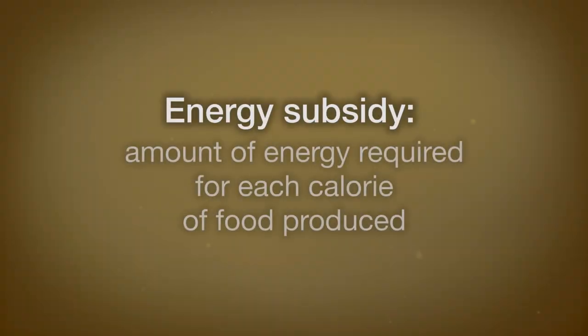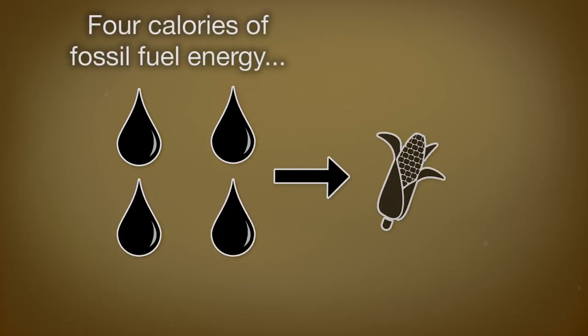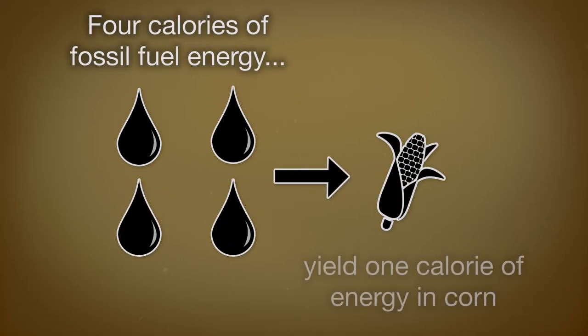When considering any kind of agricultural method, it's valuable to know the energy subsidy, which is the energy required for each calorie of food produced. For example, when growing corn, there might be four calories of fossil fuel energy expended to yield one calorie of corn. The energy subsidy for conventionally grown corn, in that case, is four calories.